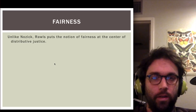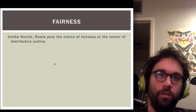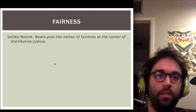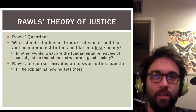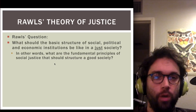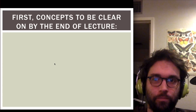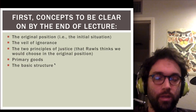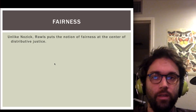First, a point of contrast between Nozick and Rawls. Unlike Nozick, Rawls puts the notion of fairness — what it means for a distribution to be fair — at the center of this question of distributive justice. Nozick wasn't concerned with fairness at all; it had no place in his overall theory.